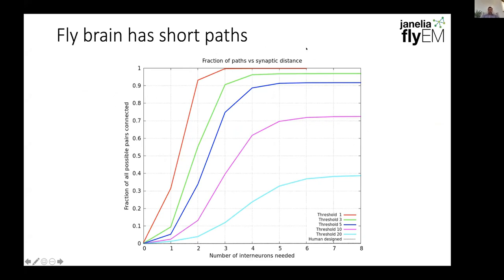The fly brain appears to have very short paths. This chart looks at every pair of traced neurons trying to find the number of interneurons needed to get from one to the other. These lines represent different thresholds — the red line is every connection with one or more synapses, while this other line requires 20 or more connections. With a threshold of 10 connections, even with just a few interneurons, over 50% of neurons are connecting to each other. That suggests things are very interconnected — it's relatively small world in this fly brain. We can compare this to the number of interneurons or logic levels required in electronic design. For people familiar with electronic design, chips have various constraints that force circuits to have several layers of stacked logic, with only a few fan-out gates at each level, leading to many more required logic levels compared to the fly brain.